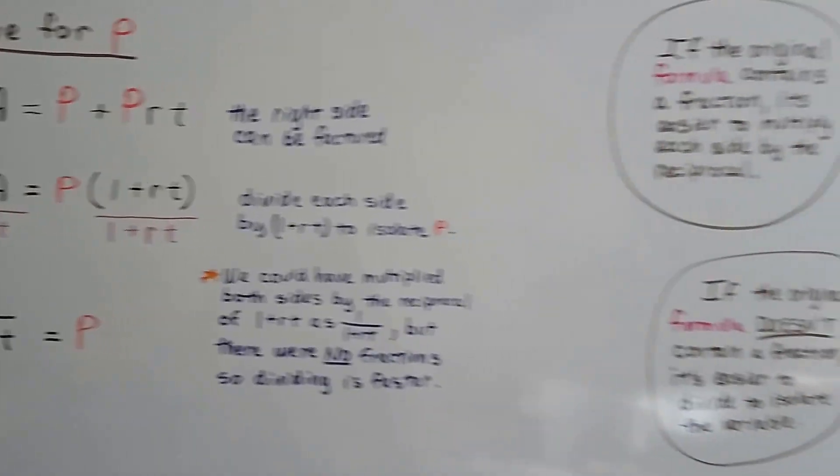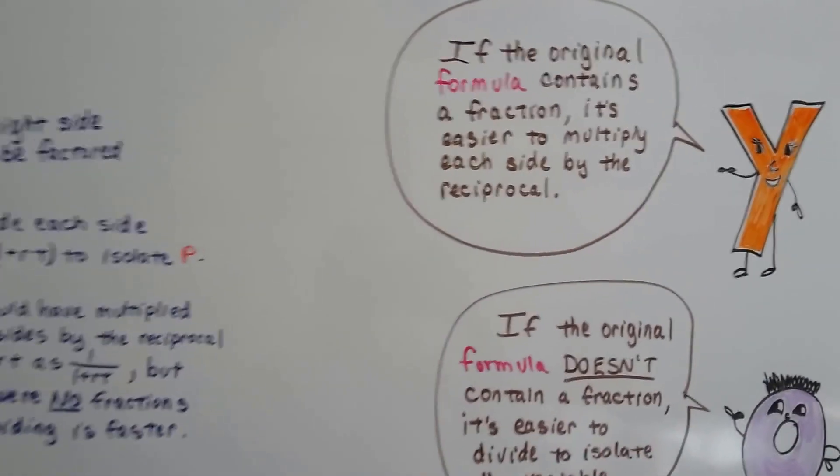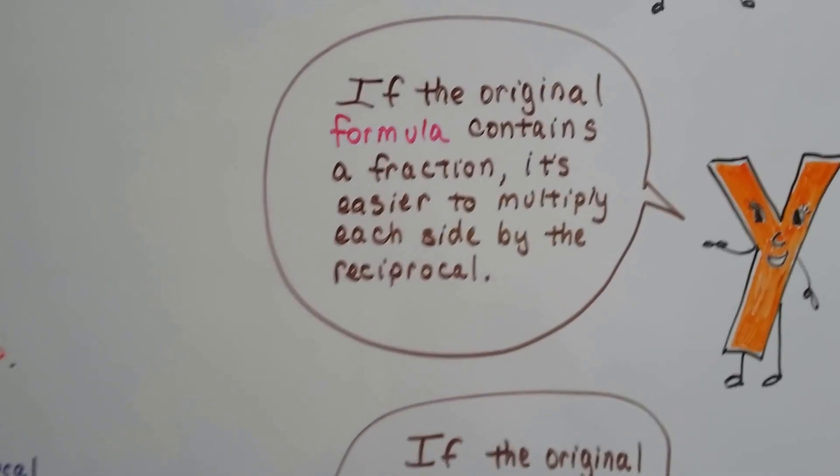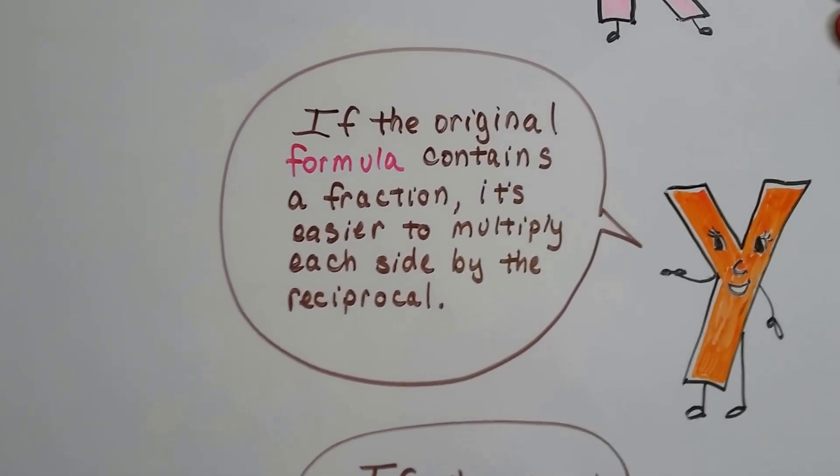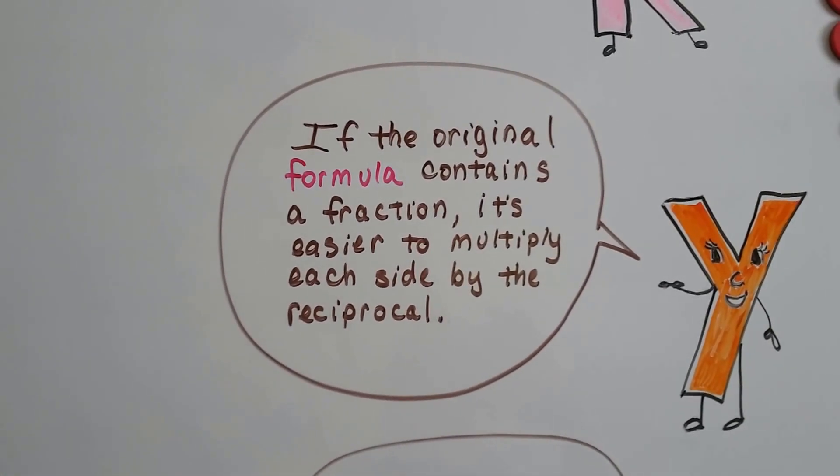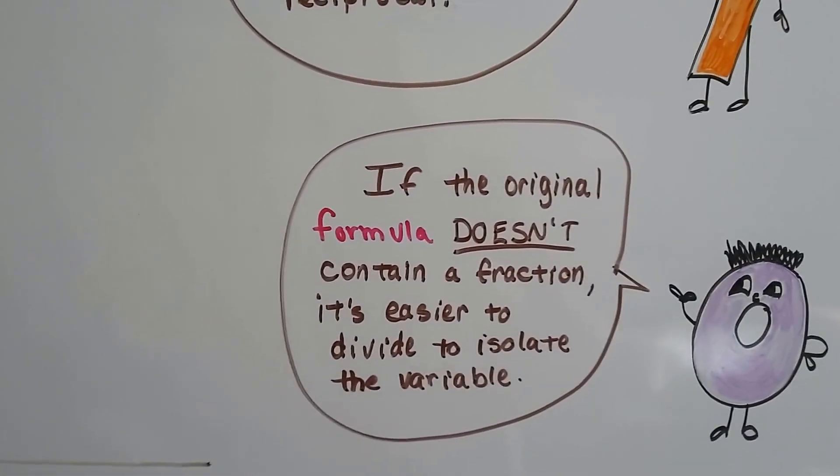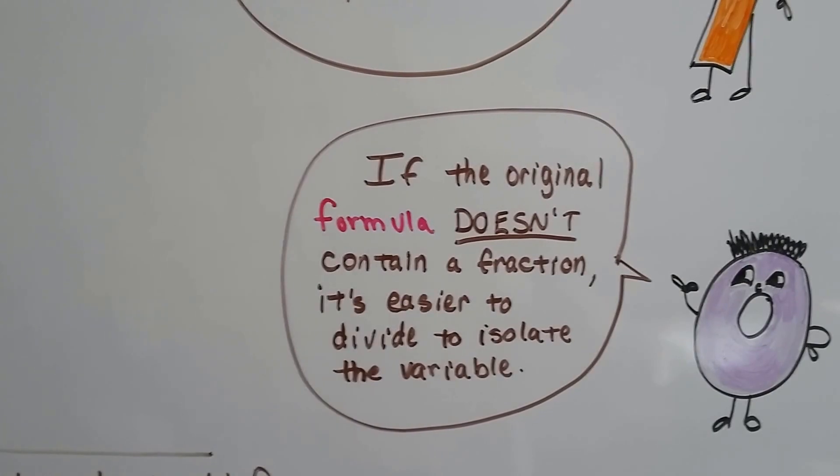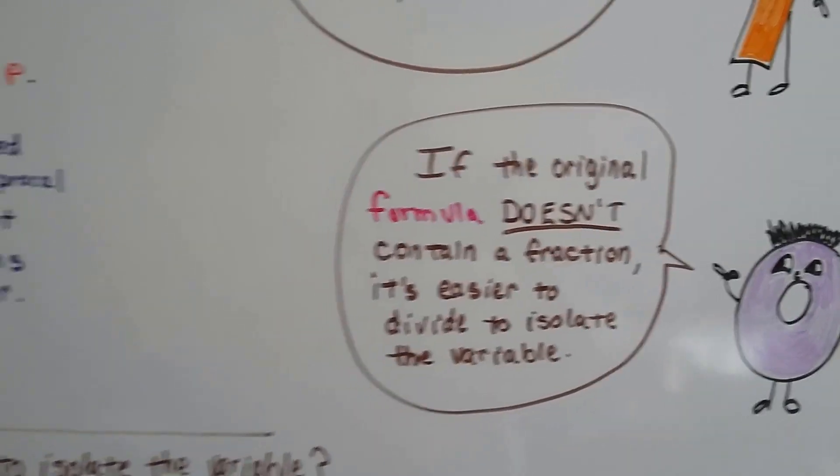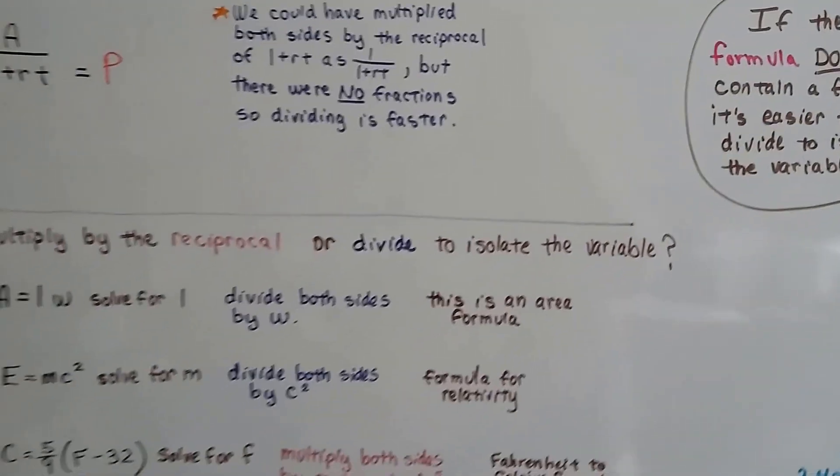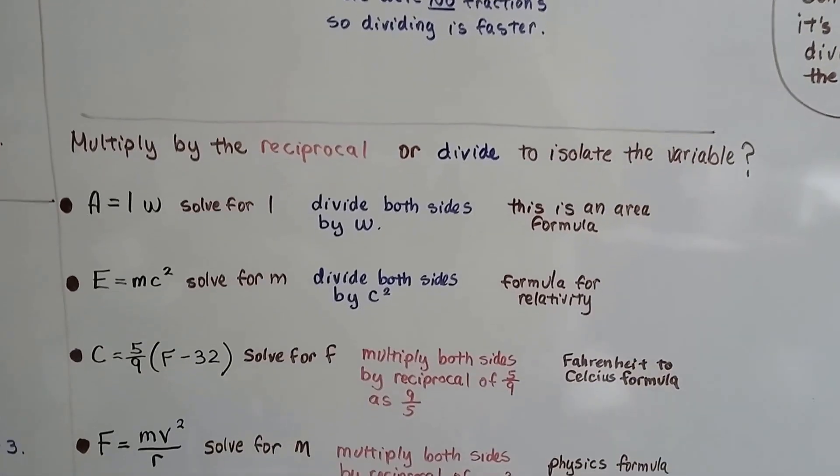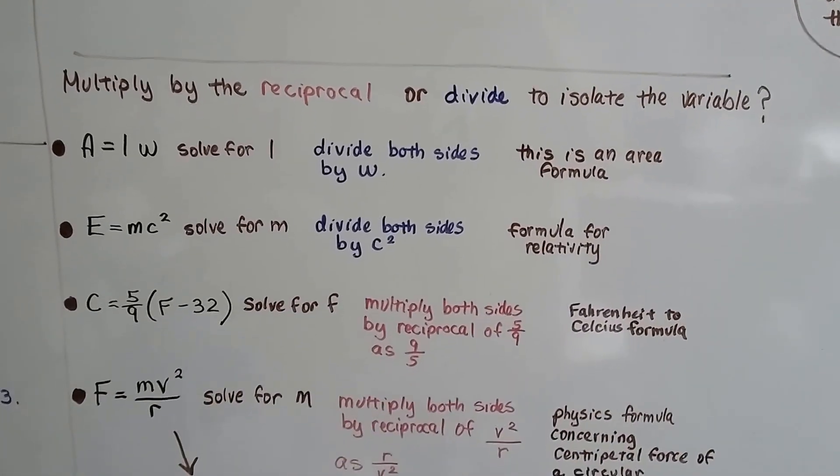So if the original formula contains a fraction, it's easier to multiply each side by the reciprocal because there's already a fraction there. But if the original formula doesn't contain a fraction, it's a lot easier to just divide to isolate the variable. So take a look at these. Should we multiply by the reciprocal, or should we just go straight and divide to isolate the variable?